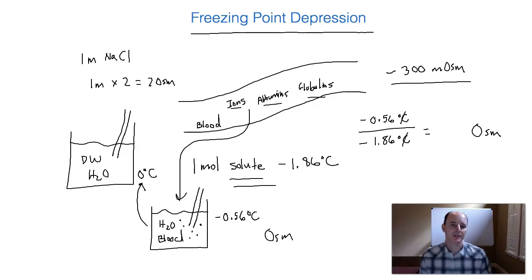And so if you take your calculator and you divide 0.56 divided by 1.86, the negatives will cancel. And you'll get an answer of, let's type that into our calculator. Okay, you'll get an answer of 0.3, and it goes on, 0.301 osmols. So we can leave it at 0.3 osmols.